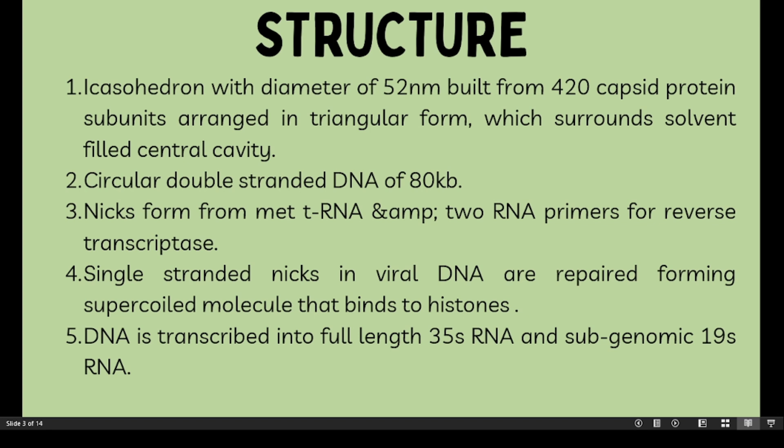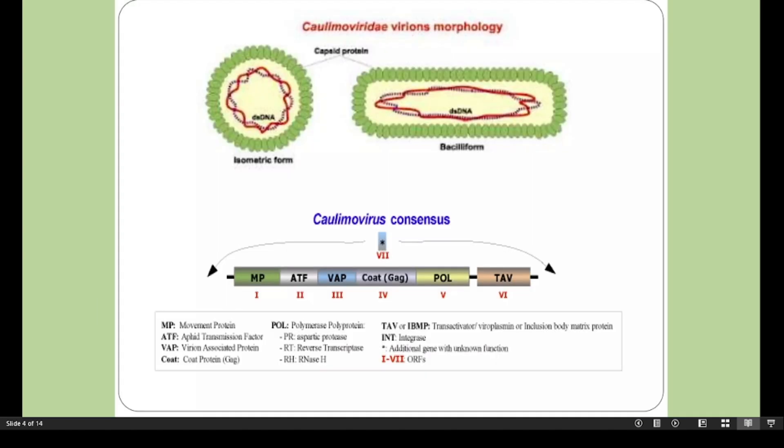After entering the host cell, these single-stranded nicks in the viral DNA are repaired, forming supercoiled molecules that bind to histones. This DNA is transcribed into a full-length, terminally redundant 35S RNA and subgenomic 19S RNA. This is the structure of Cauliflower Mosaic Virus.